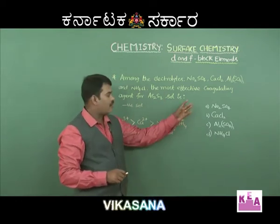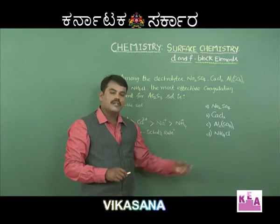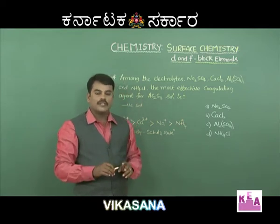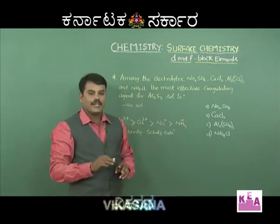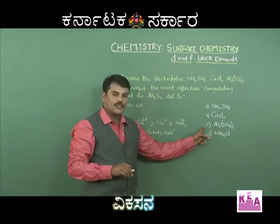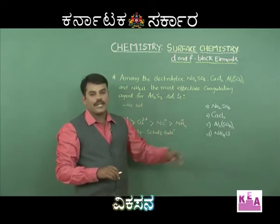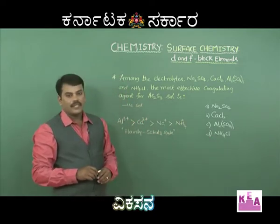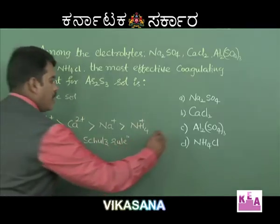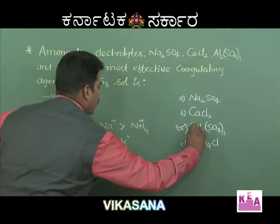It does not mean the remaining electrolytes will not cause coagulation — they do coagulate — but aluminium sulphate is the most effective when compared to the rest. Therefore, option C must be the correct one.